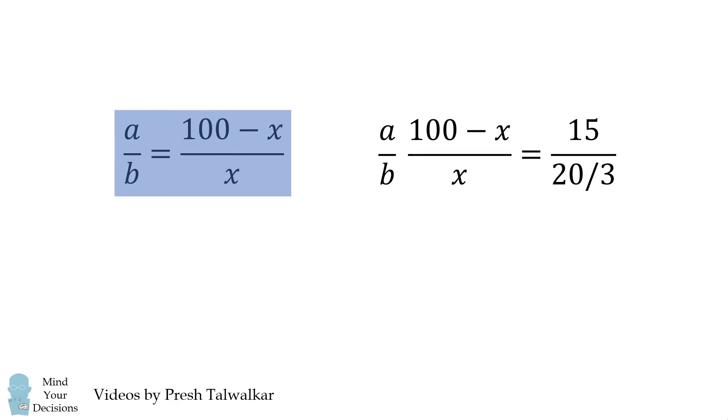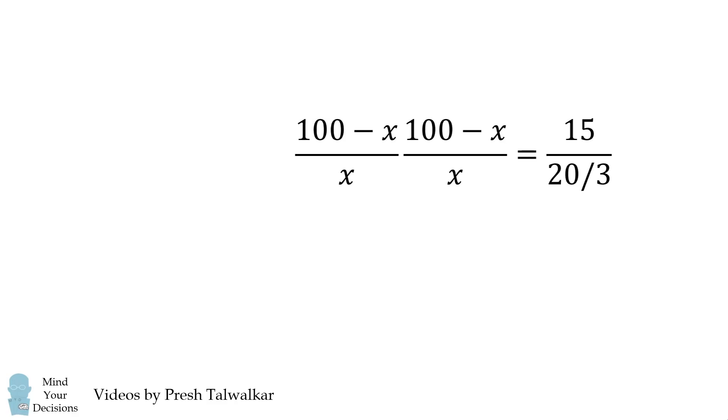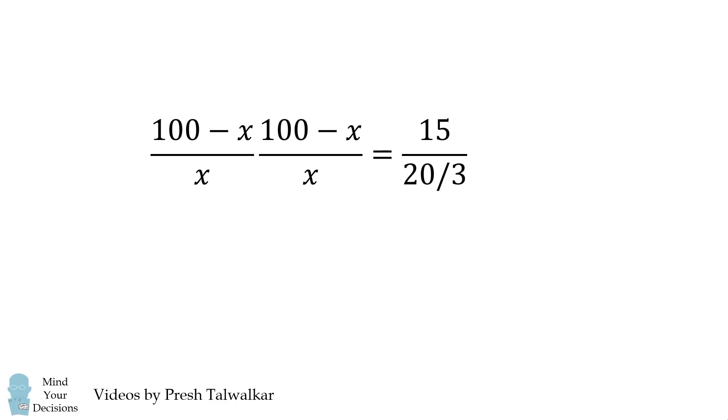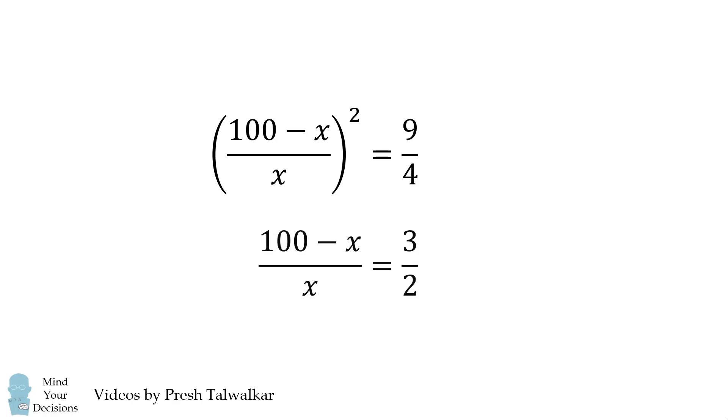We can then substitute in the ratio of a over b into the second equation. The result is the ratio 100 minus x all over x is squared. We can simplify the fraction on the right hand side. We then take the positive square root of both sides.